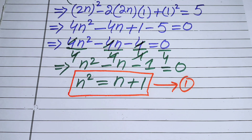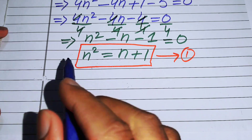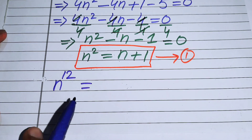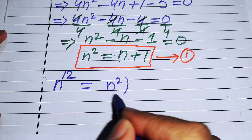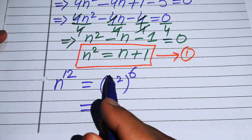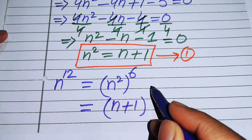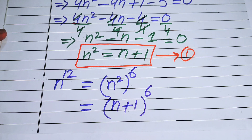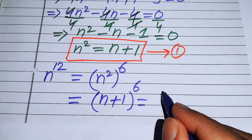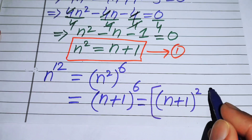Now we move toward our target: finding n to the power of 12. We write n¹² as (n²)^6. Substituting n² = n + 1, this becomes (n + 1)^6.